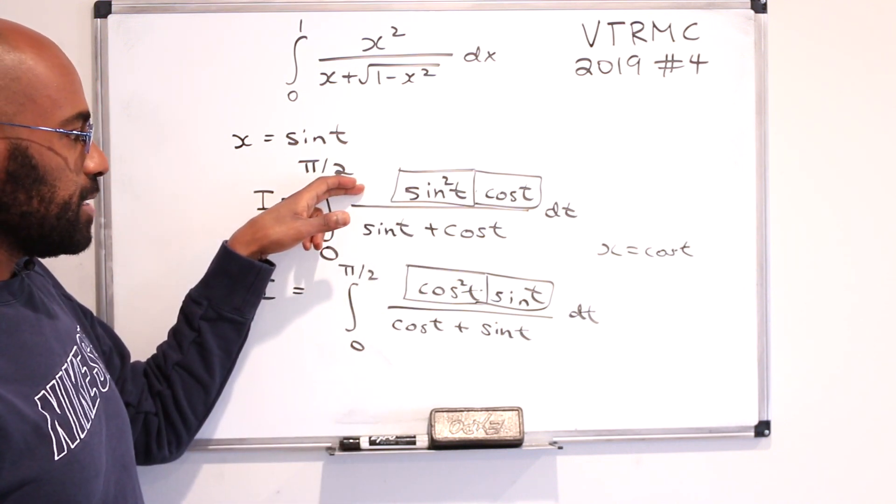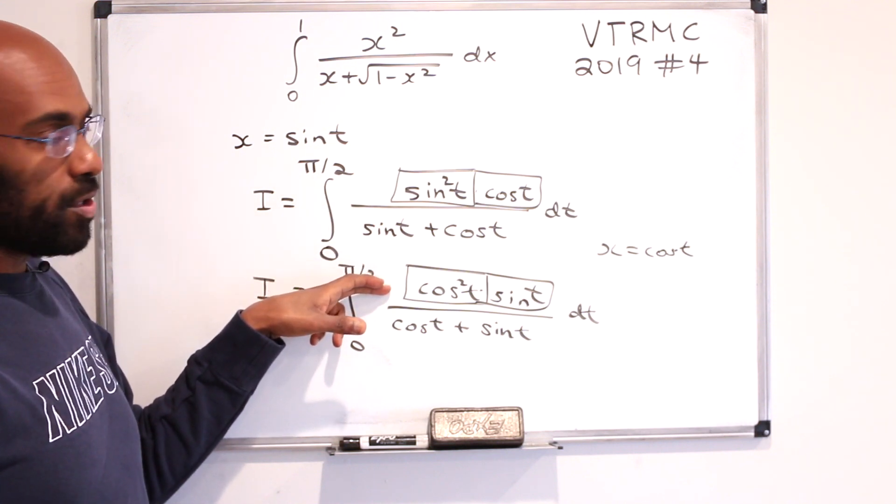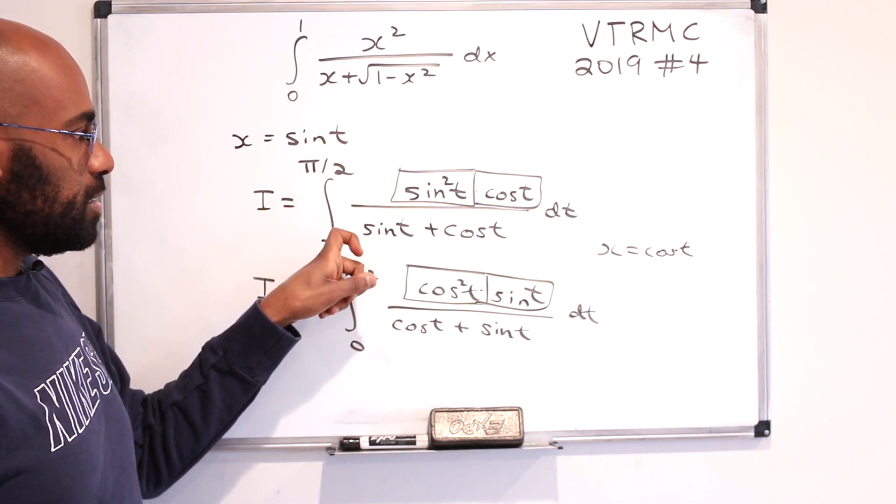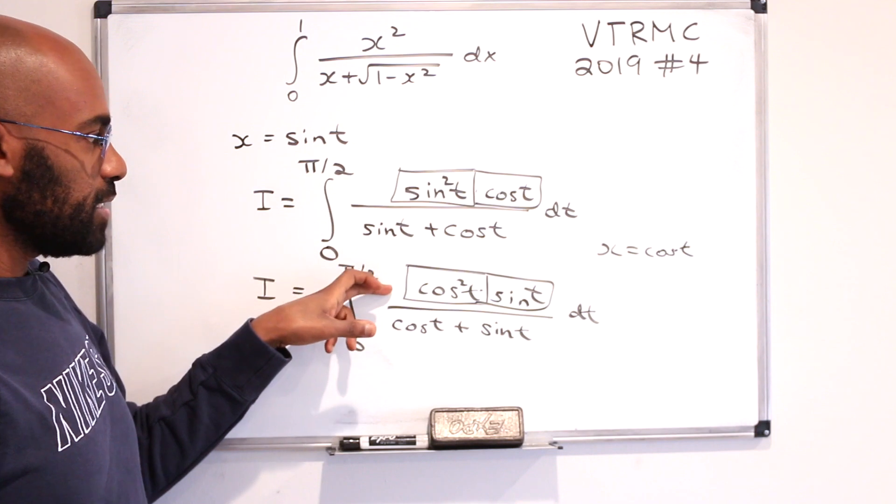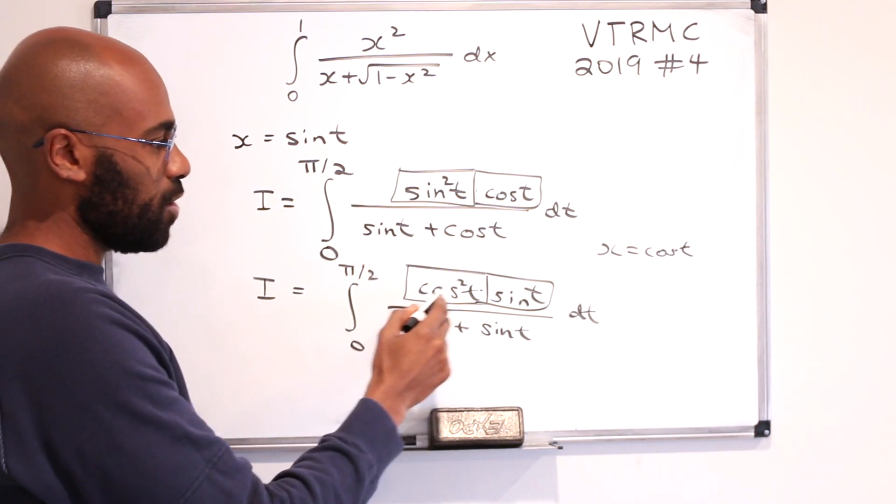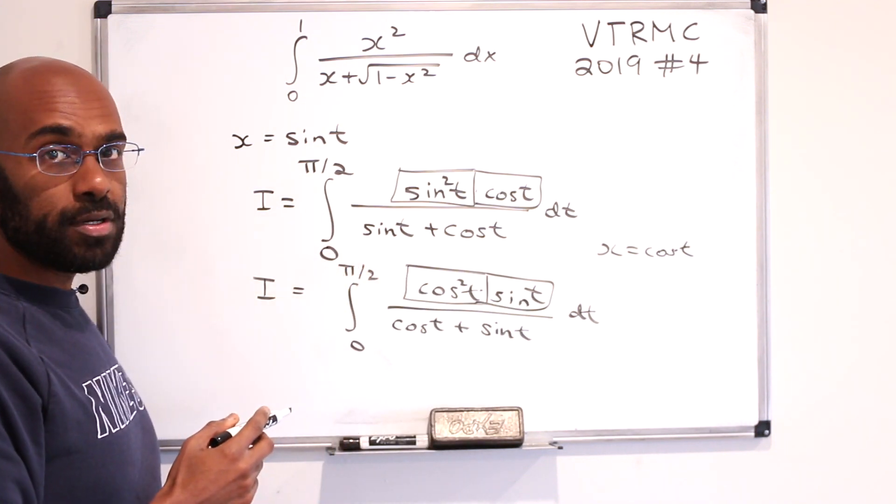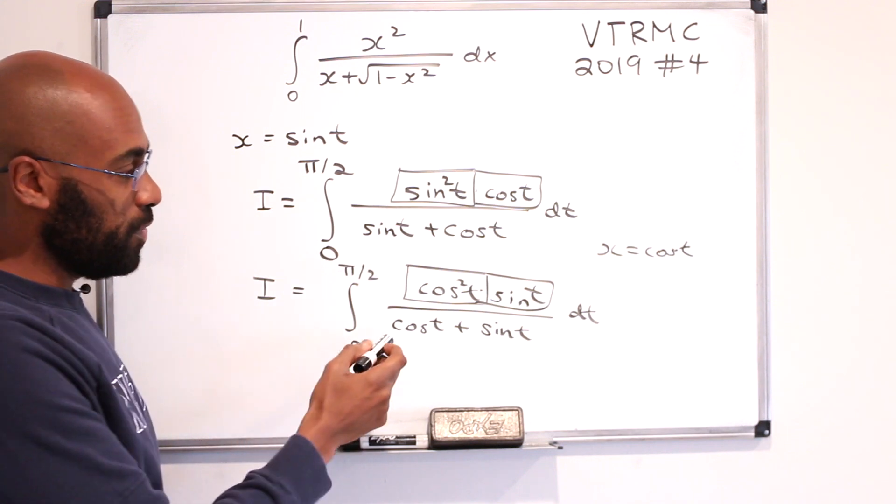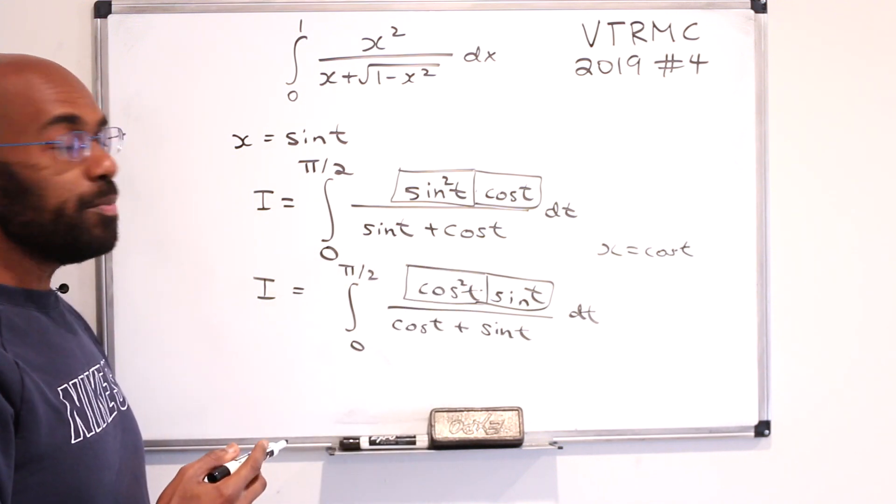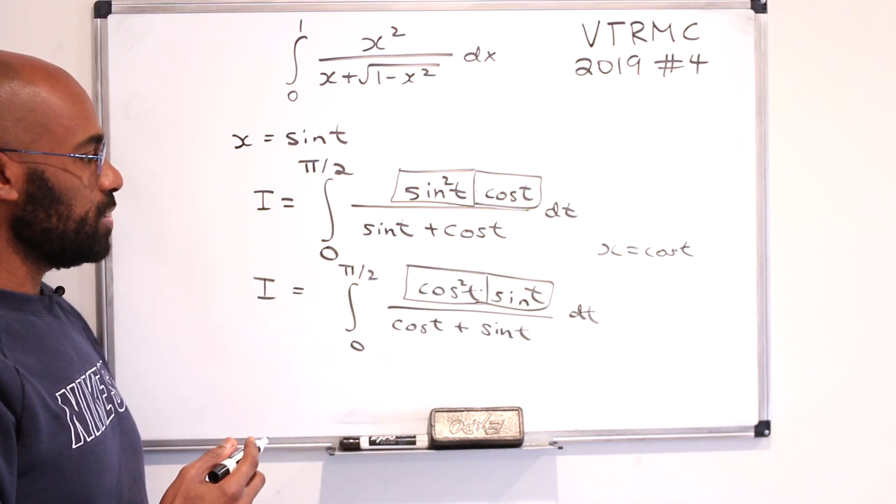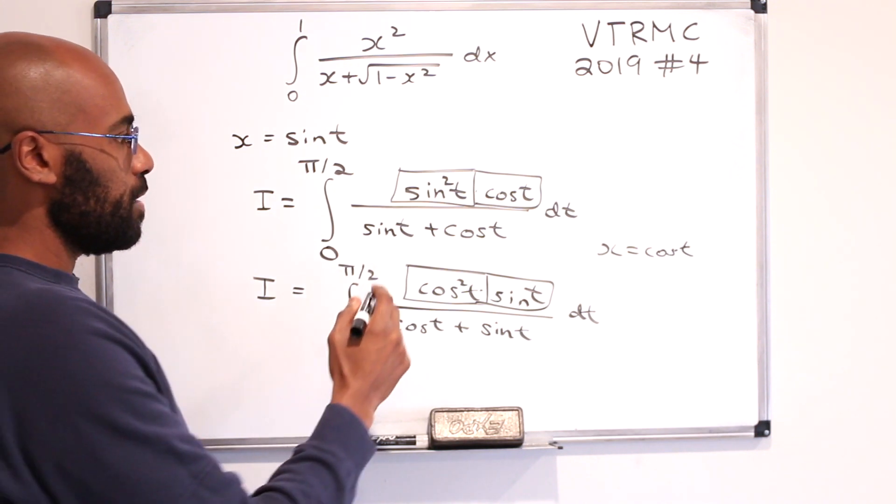And here, if we factor that out, we'd have a sine t. And here, if we factor that out, we'd have a cosine t. So if we added these, we get sine t plus cosine t in the numerator with that cosine t sine t as a factor. And that'll eliminate with the denominators, which are the same, both being sine t plus cosine t.